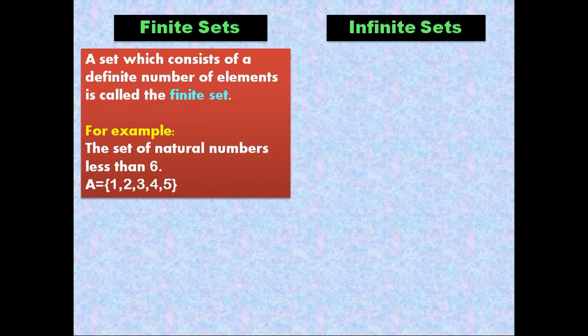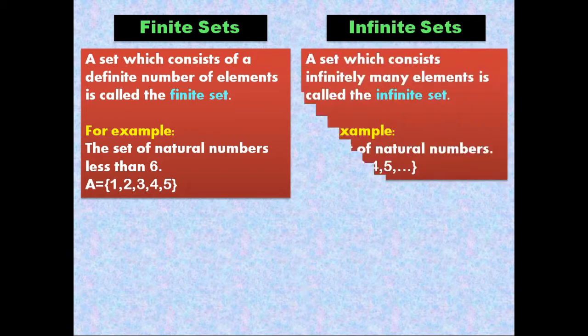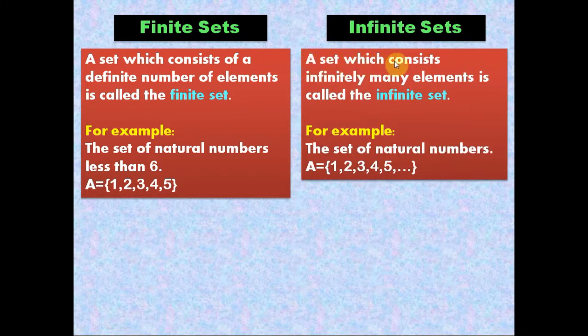Next, we will see infinite sets. Let's see the definition. A set which consists of infinitely many elements is called an infinite set. It means that a set which has infinitely many elements is called an infinite set. For example, the set of natural numbers.